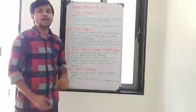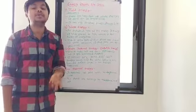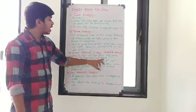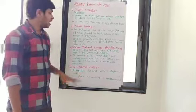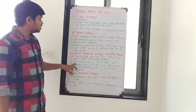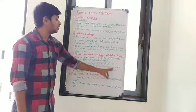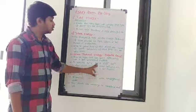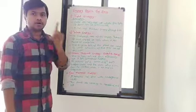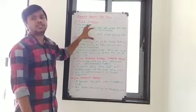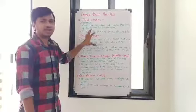For ocean thermal energy: the first limitation is high cost — we cannot efficiently use it for commercial purposes. The second limitation is that it requires a 20 degree Celsius temperature difference between the surface water and the water 2 km below the surface, which is not possible everywhere. In all three types, the common problem is the location, which is the main challenge for these types of energy.